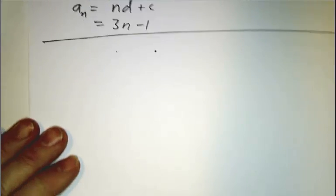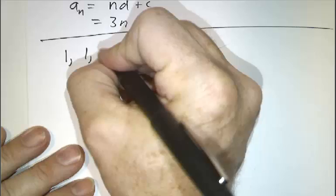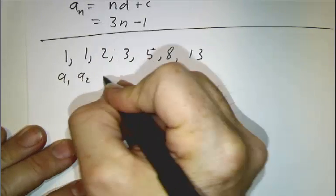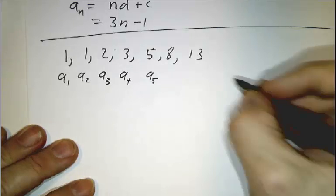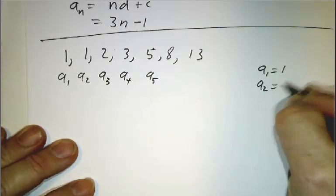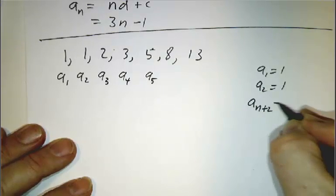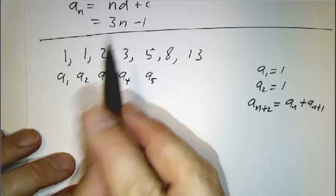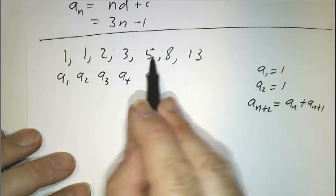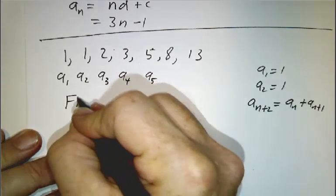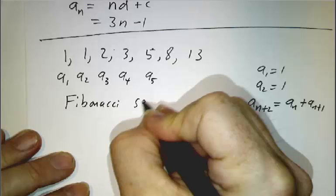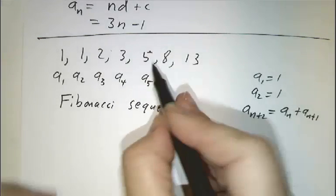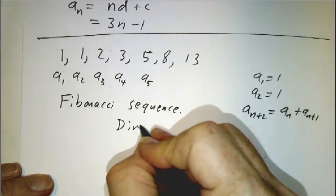Next example: 1, 1, 2, 3, 5, 8, 13. This is defined by a1 = 1, a2 = 1, and from then on each number is the sum of the previous two. So 2 is 1+1, 3 is 1+2, 5 is 2+3, 8 is 3+5. This is called the Fibonacci sequence. Does it converge to anything? No — it gets bigger and bigger. It certainly diverges.